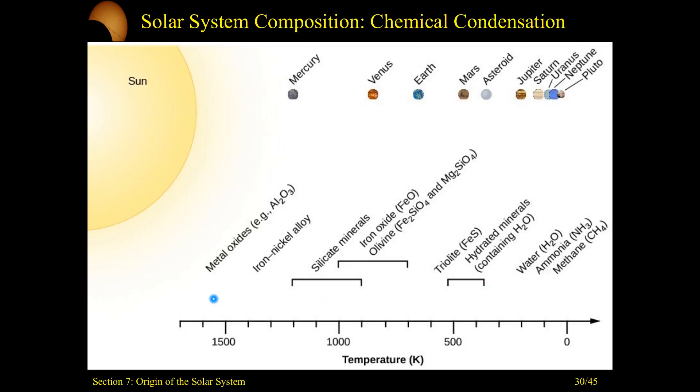As you are closer to the sun, closer to, at that point, the protostar, you're going to have a greater temperature, which means that you're going to need higher, more complex elements that can condense, turn into solids.